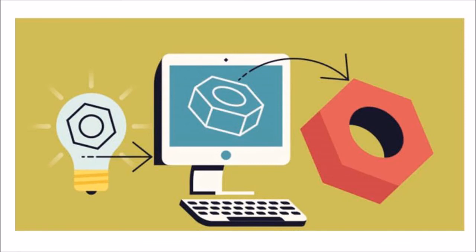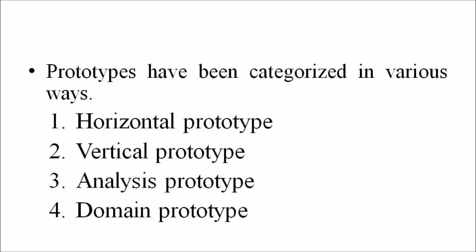Something to be thrown away when the industrial-strength version was developed. RAD — Rapid Application Development — refines the prototype into the final product. Prototyping has been categorized in various ways. The commonly accepted prototype categories are: horizontal prototype, vertical prototype, analysis prototype, and domain prototype.